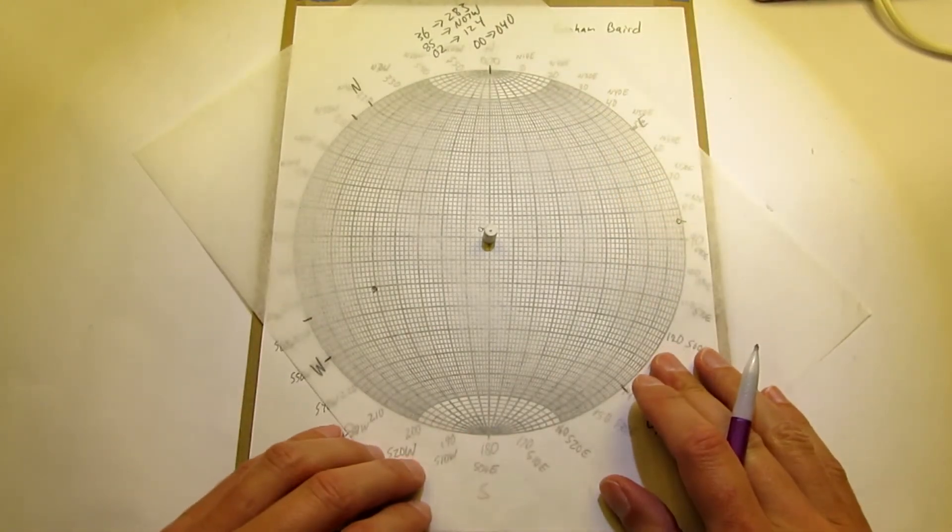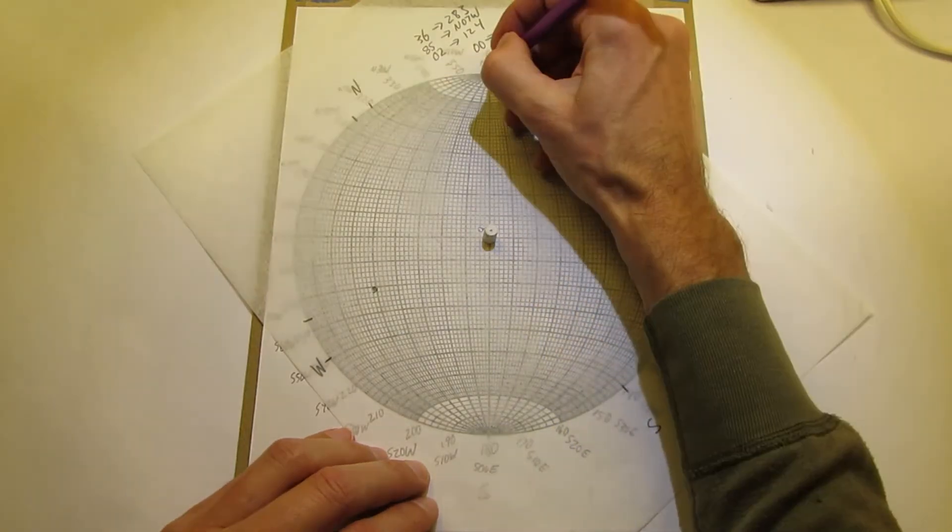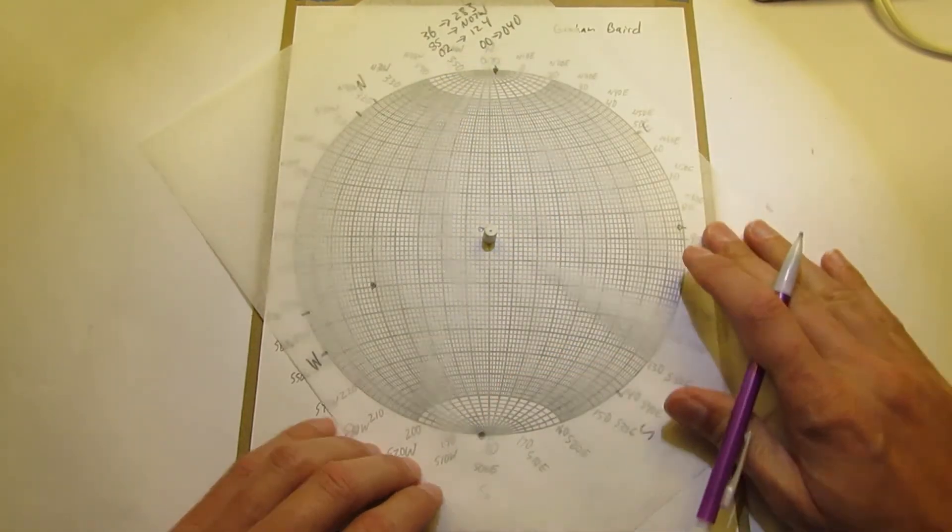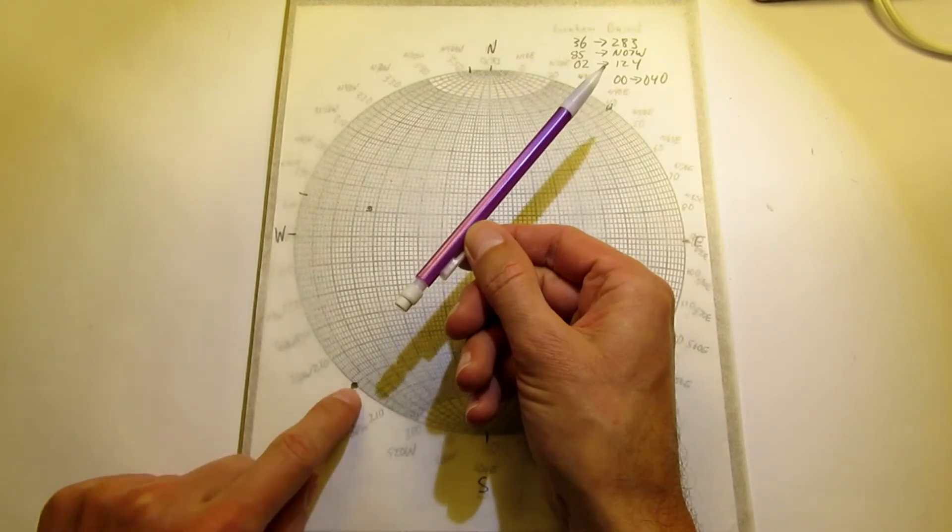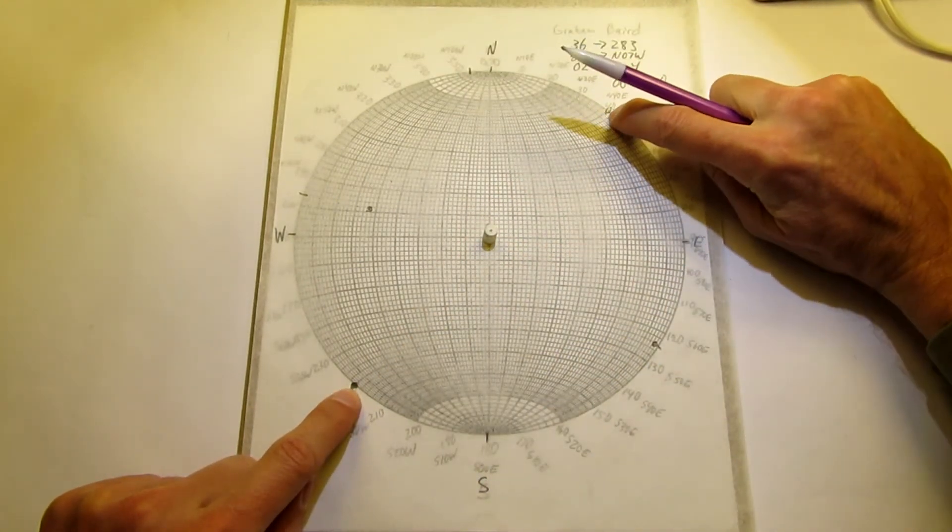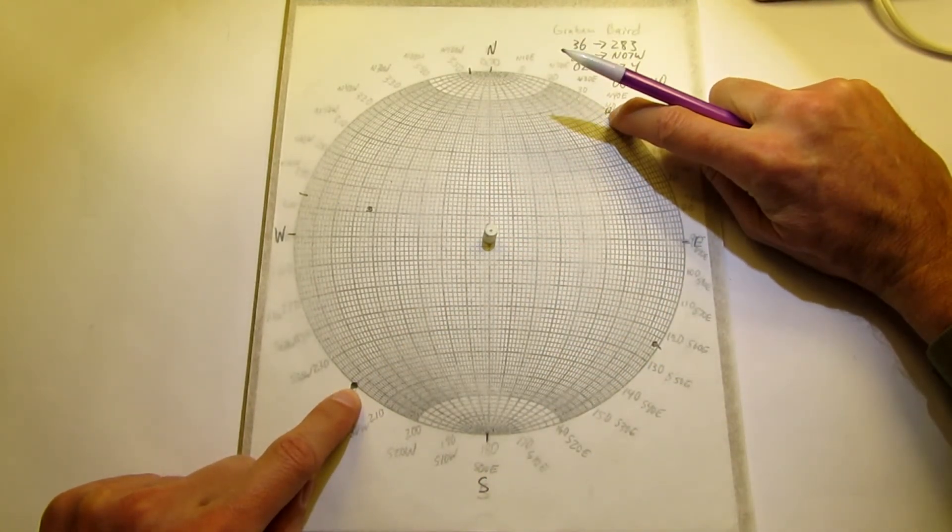And that's going to plot on both sides of the stereo net because it's a horizontal line like this. And so it will project and catch just the edge of the stereo net on both sides.